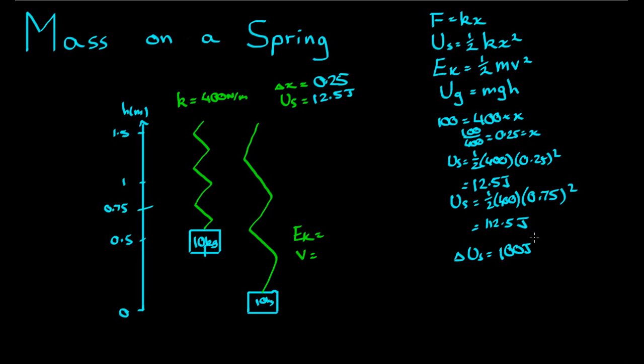If you weren't thinking very clearly, you might suggest that the box, by the time it reaches this point here, will have gained 100 joules of kinetic energy. That would be incorrect because you're ignoring the fact that there's another type of energy involved. What have we accounted for? We've accounted for spring potential. We've accounted for kinetic energy. That's the thing we think is increasing. But we haven't accounted for that gravitational potential energy.